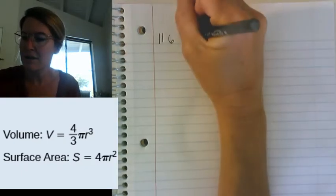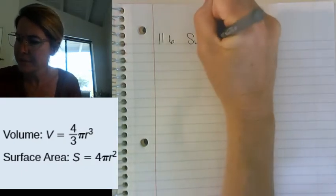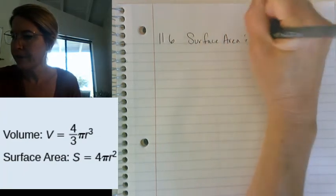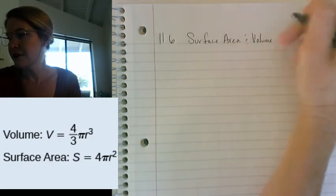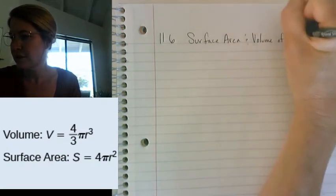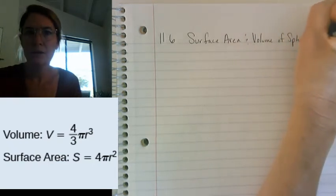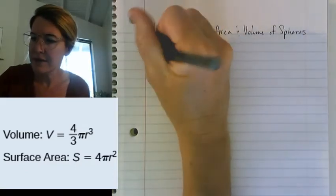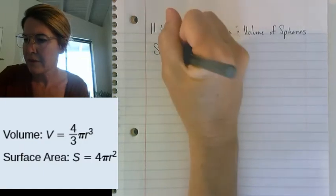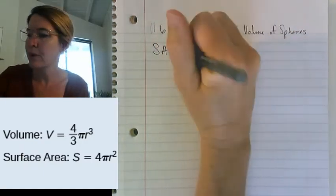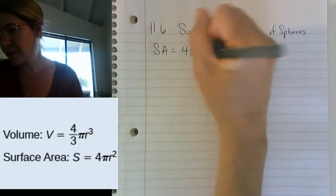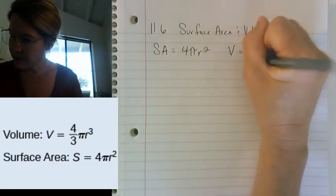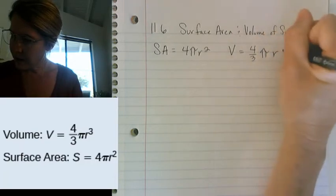Alright, so today we're going to be working on surface area and volume of spheres. This is pretty mellow. There are two formulas that we're going to be using. Surface area for spheres is 4πr², and volume is 4/3πr³.